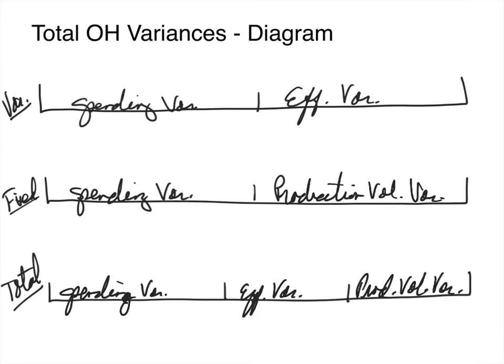Now I'm going to show how to calculate the total variances — that's what we're looking at in this particular video. I'm looking for an overall spending variance, an overall efficiency variance, and a total production volume variance. Looking at the top two diagrams, we have a spending variance and an efficiency variance in variable, and a spending variance and a production volume variance in fixed. So to get the total spending variance, the spending variance in variable plus the spending variance in fixed gives the total overall spending variance.